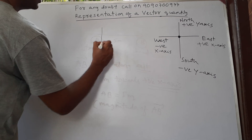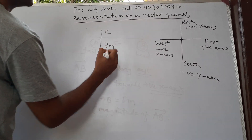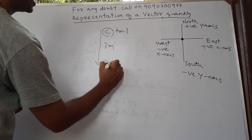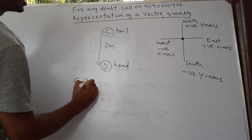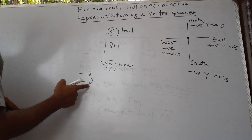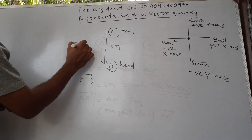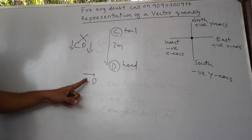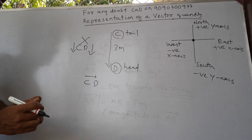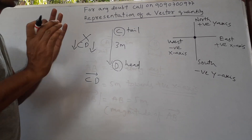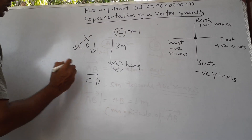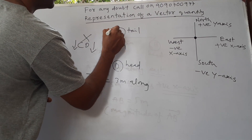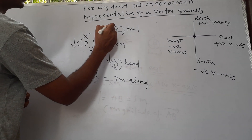Let me draw another diagram. Let's say this is CD and the length is 3 meters. Here C is the tail and D is the head, so I write vector CD. Don't write it the wrong way — always put the arrow correctly. In some books bold-type letters are used, but in handwriting you should put an arrow over the letter to represent a vector.